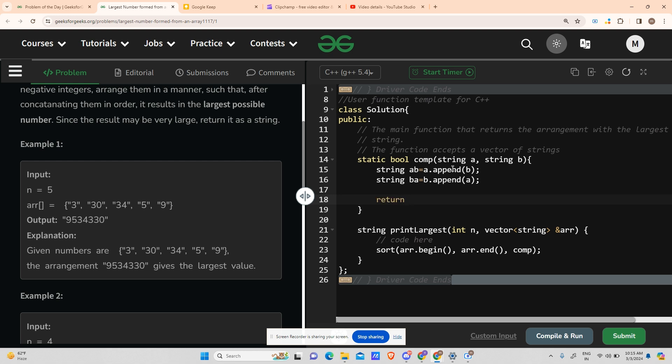It was not giving the TLE when I was using these values, append, compare, etc., but it was giving TLE when I was using the logical operator. So it will be: return AB dot compare BA greater than 0. I am using a ternary operator here that if this value is true, then return 1, otherwise return 0.